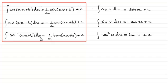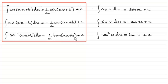The same applies when we integrate sec²(x) with respect to x — we get tan(x), tan of the same angle. So the integral of sec²(ax + b) becomes tan(ax + b), but it's 1 over a in front.